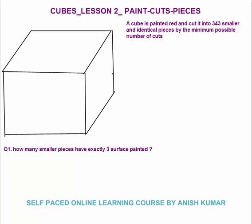Hello, this is Cubes lesson 2. In this I will discuss: if we paint the cube then cut the cube, how many pieces will have color on how many surfaces — that is what we need to find. The first question is: a cube is painted red and cut into 343 smaller identical pieces by the minimum possible number of cuts.